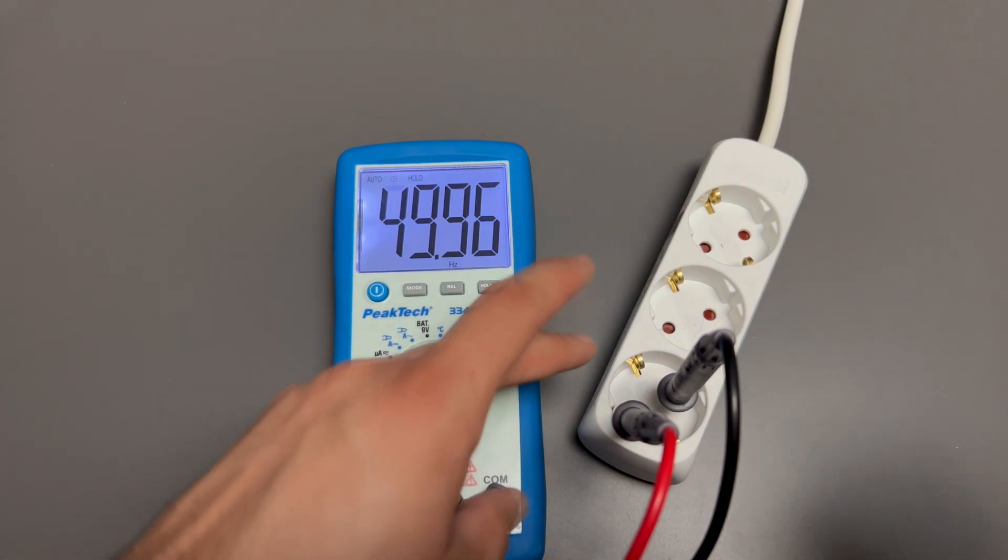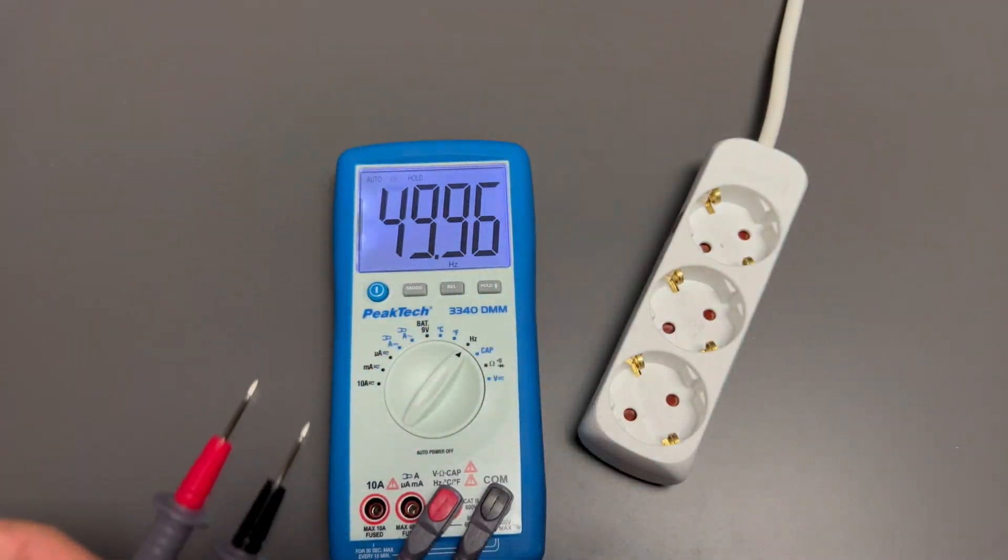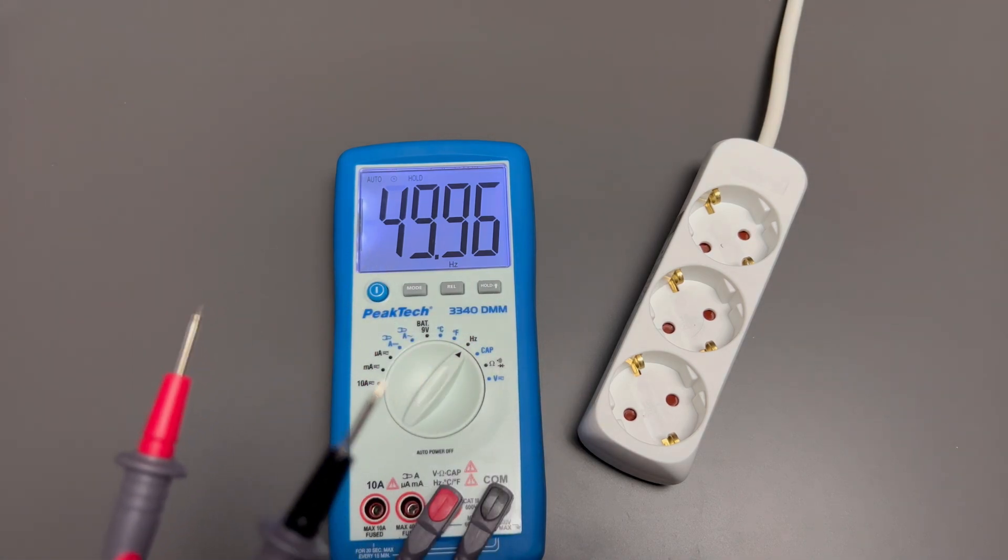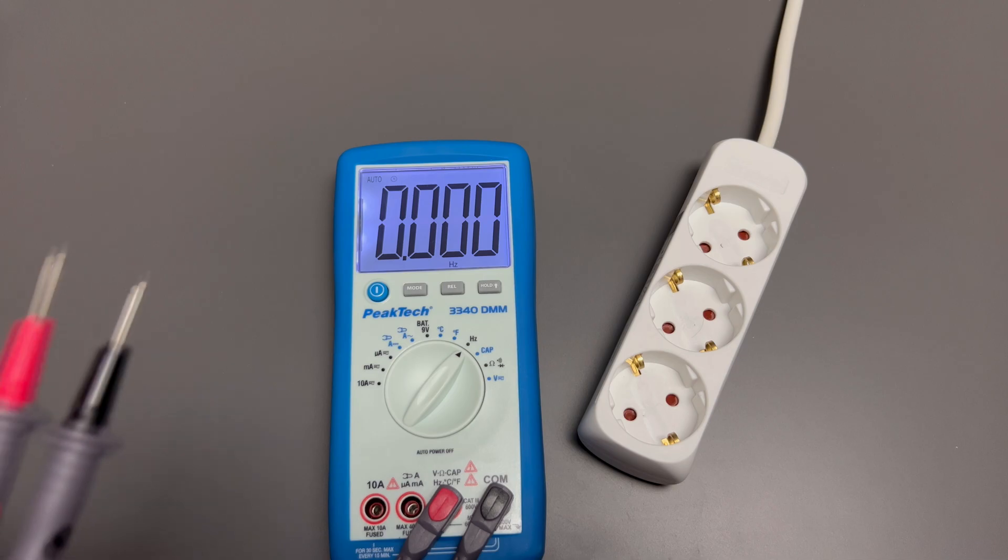Press hold button to toggle in and out of the data hold mode. In the data hold mode, the hold enunciator is displayed and the last reading is frozen on the display. Press the hold button again to exit and resume readings.